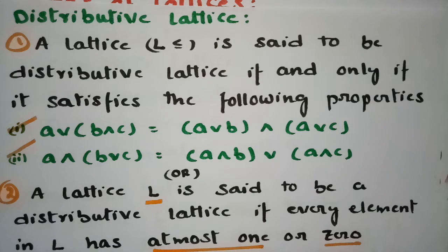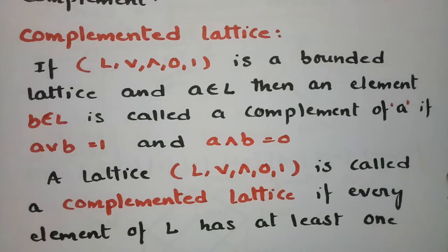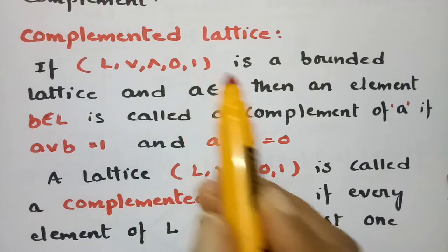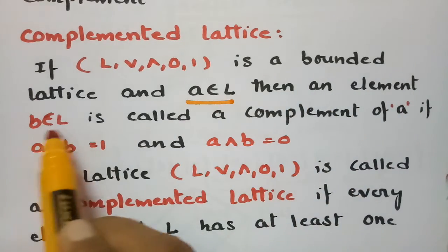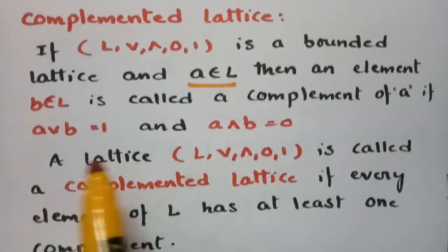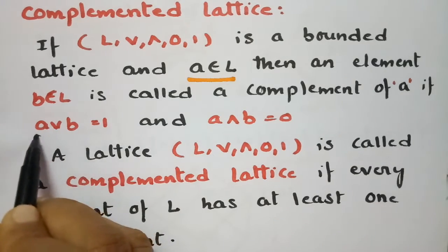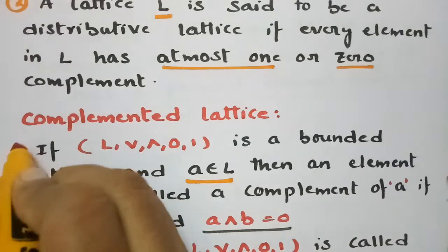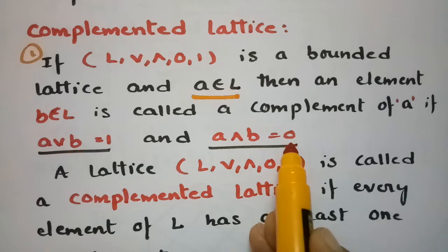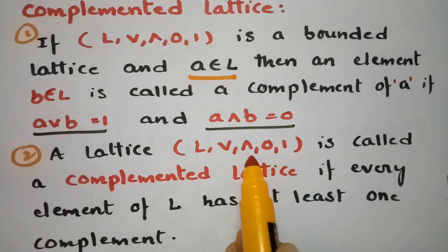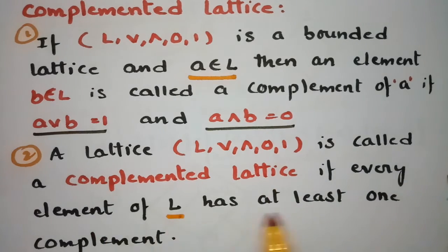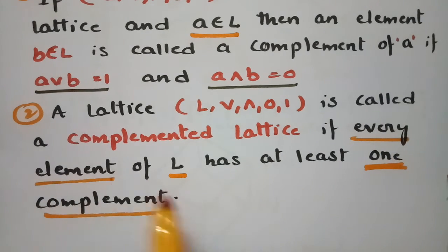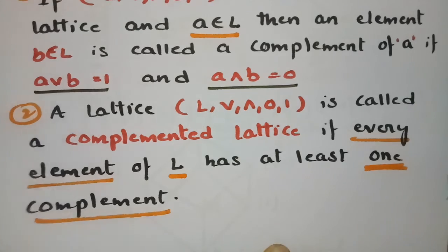Many worked examples on distributive lattices are available in other videos in the playlist. The last type is the complemented lattice. A bounded lattice L with least element 0 and greatest element 1 is complemented if for every element A in L there exists B in L such that A ∨ B = 1 (greatest element) and A ∧ B = 0 (least element). Every element of L must have at least one complement.